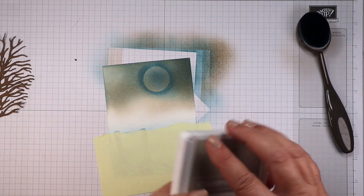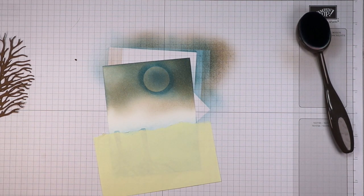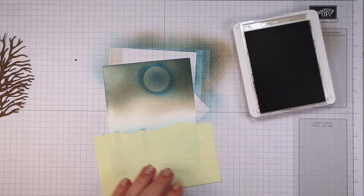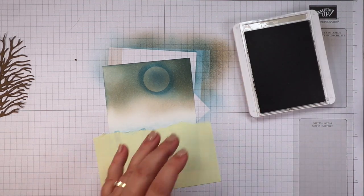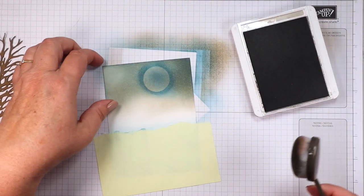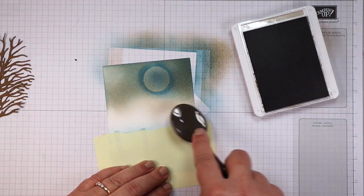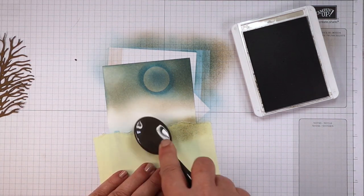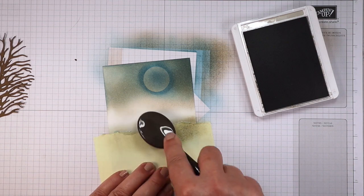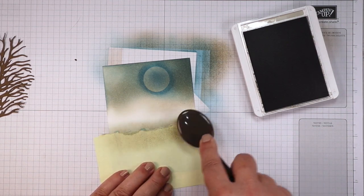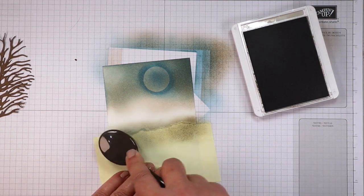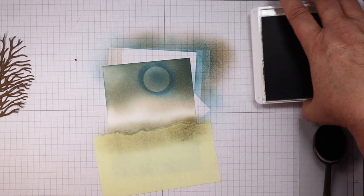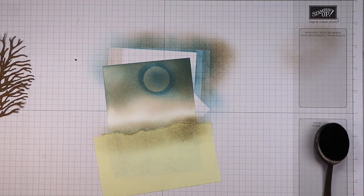And we're going to use Sahara sand for this. I just want some color there, it's going to ground our trees a little bit. So that was Sahara sand.